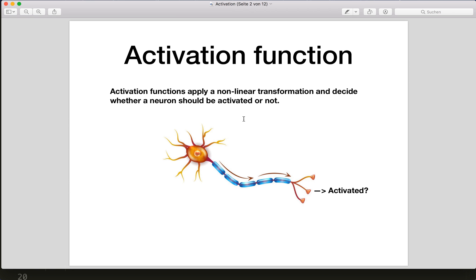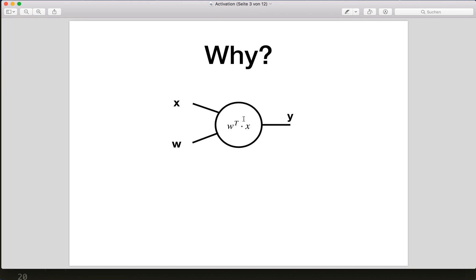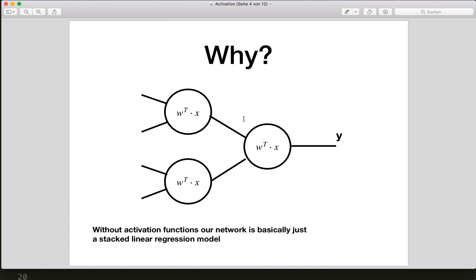Activation functions apply a nonlinear transformation to the layer output and basically decide whether a neuron should be activated or not. Why is only a linear transformation not good enough? Typically we have a linear layer that multiplies the input with some weights and adds a bias. Without activation functions, we would have only linear transformations after each other, making our whole network essentially just a linear regression model, which is not suited for more complex tasks.